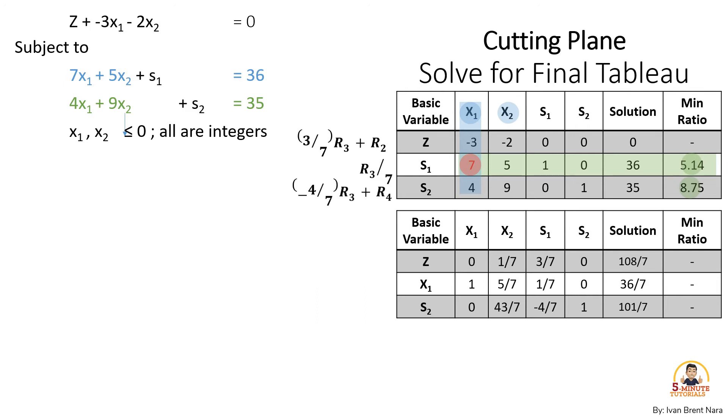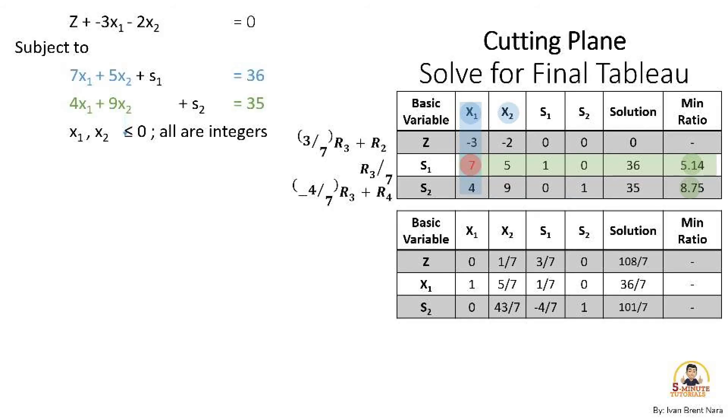The same with the row 4 under our second constraints. It's negative 4 because we have positive 4 as a coefficient under our pivot column to make it 0. So -4/7 multiplied to row 3 plus row 4.